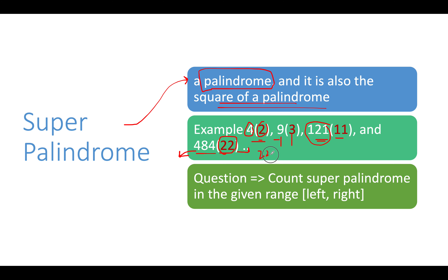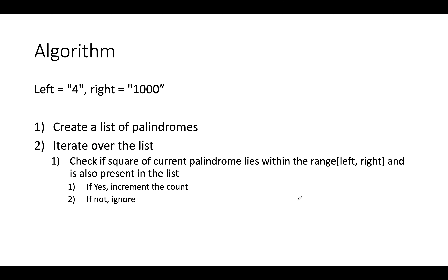In this question we are given a range of left and right, both inclusive, and we need to count the number of super palindromic numbers in this given range. Let's understand the algorithm I have created for this.